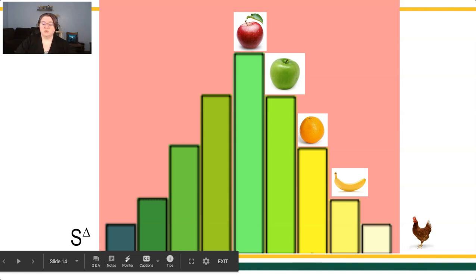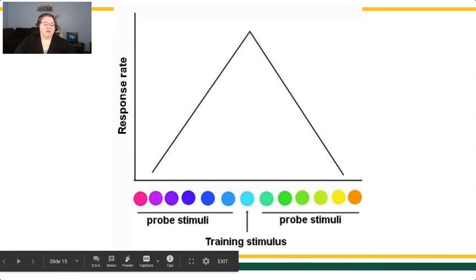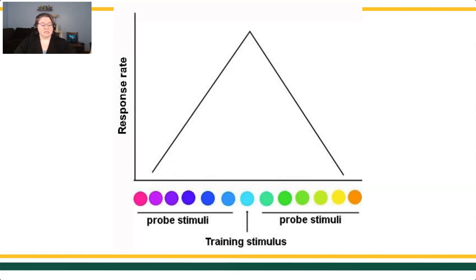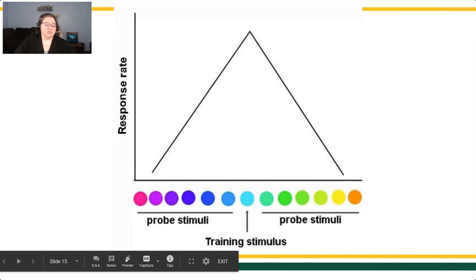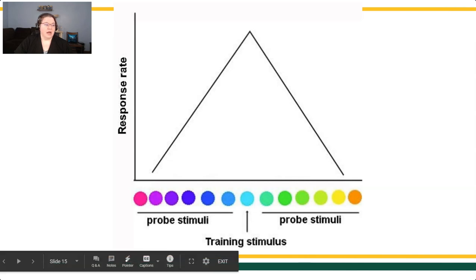Another way of looking at a generalization gradient: if you've been trained to a teal color in the middle, the graph shows you the probability that you would endorse other colors as being that same color. You're very likely to select an off-green color just to the right of teal, but much less likely to say that orange is the same color as teal.